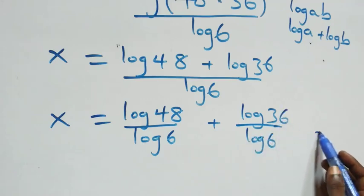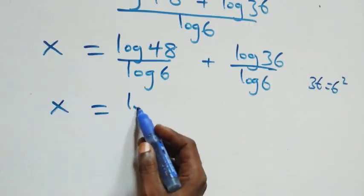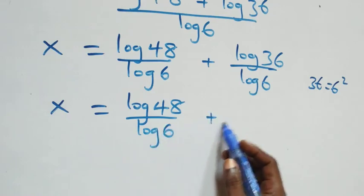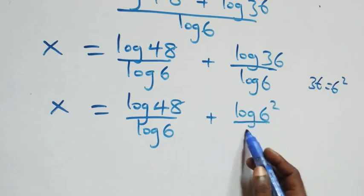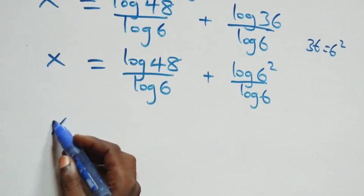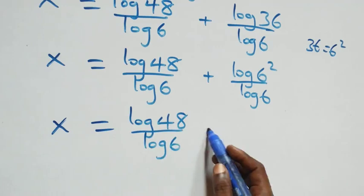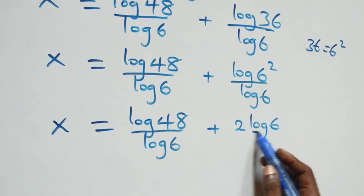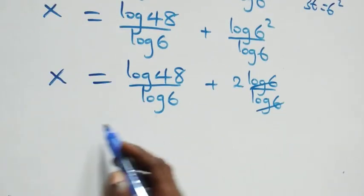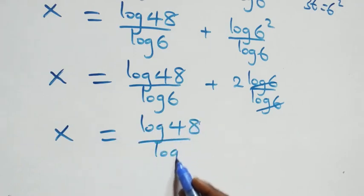The next step: thirty-six can be expressed as six times six, which is six squared. So we have x equals log forty-eight over log six plus log six squared over log six. We apply the power rule: the two comes down, giving log forty-eight over log six plus two log six over log six. The log sixes cancel, leaving x equals log forty-eight over log six plus two.